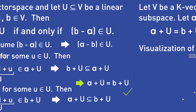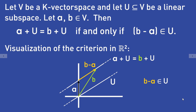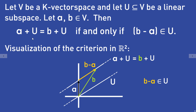Looking at our R2 example again, the vector b minus a is an element of the subspace U. The criterion now tells us that a plus U is equal to b plus U.